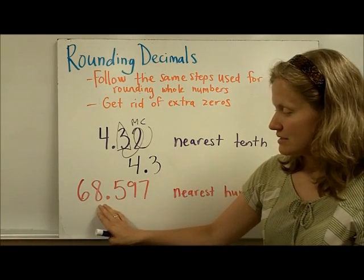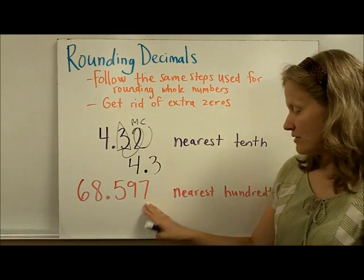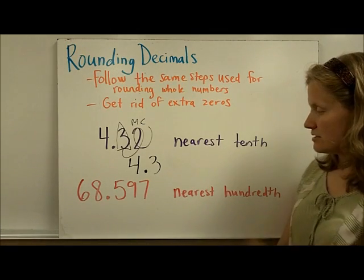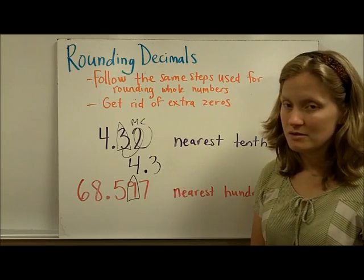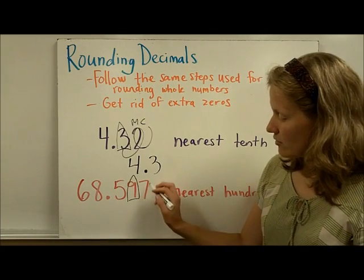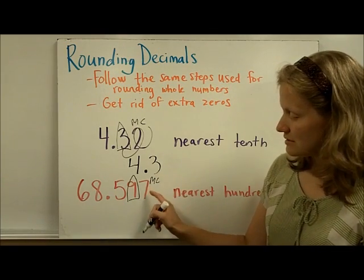Here's another example. 68.597, and I've been asked to round it to the nearest hundredth. So I'm going to find the hundredths place, here it is at the nine, and I'm going to look back to mission control, which is the seven.